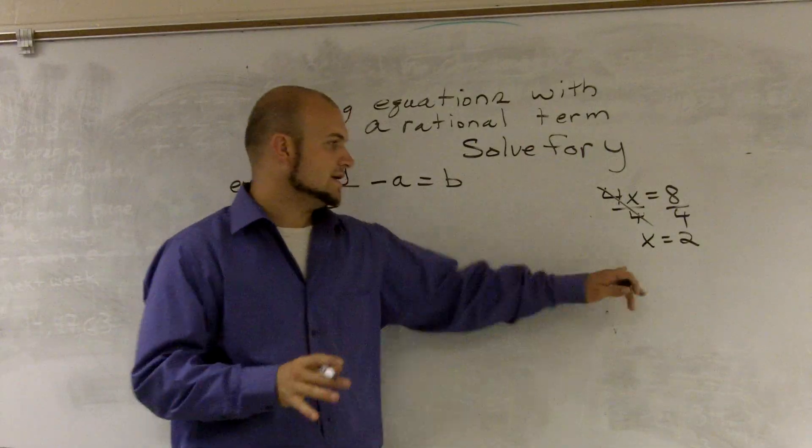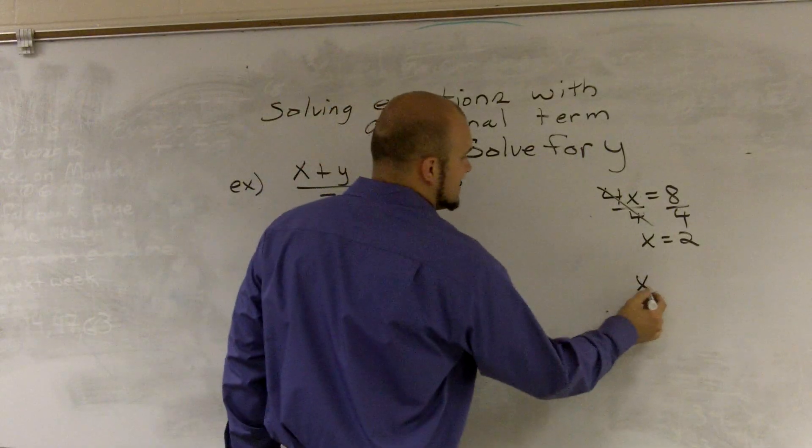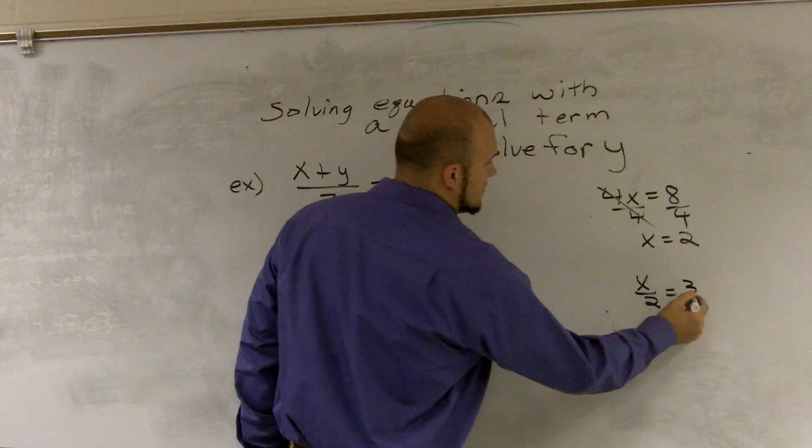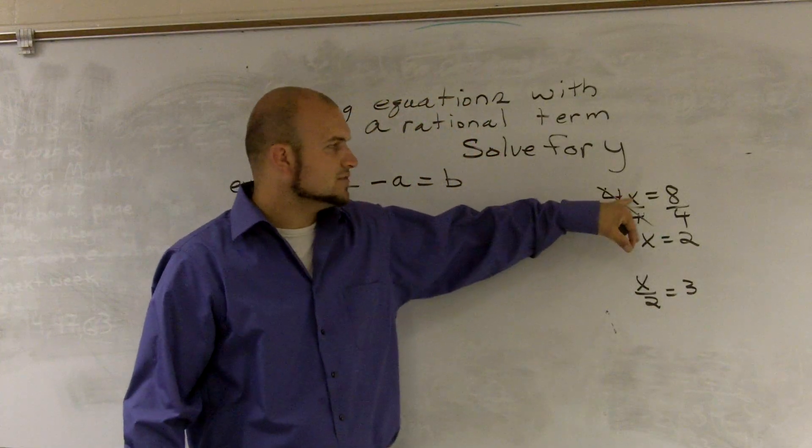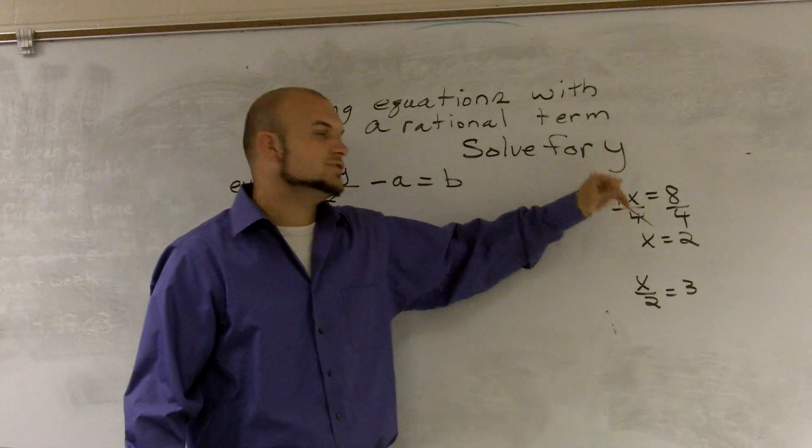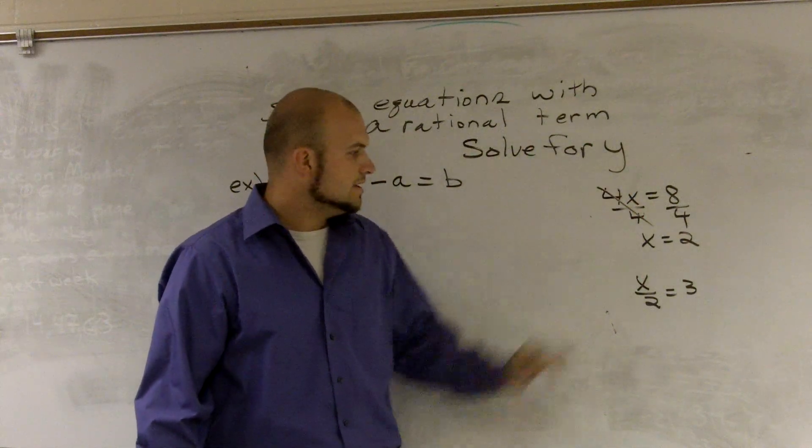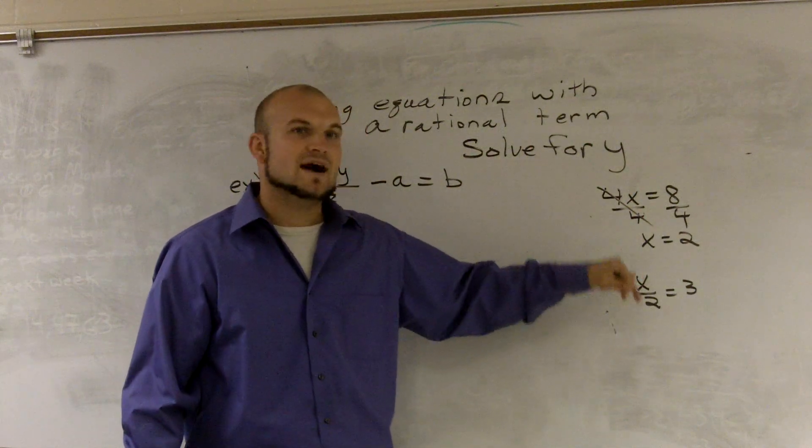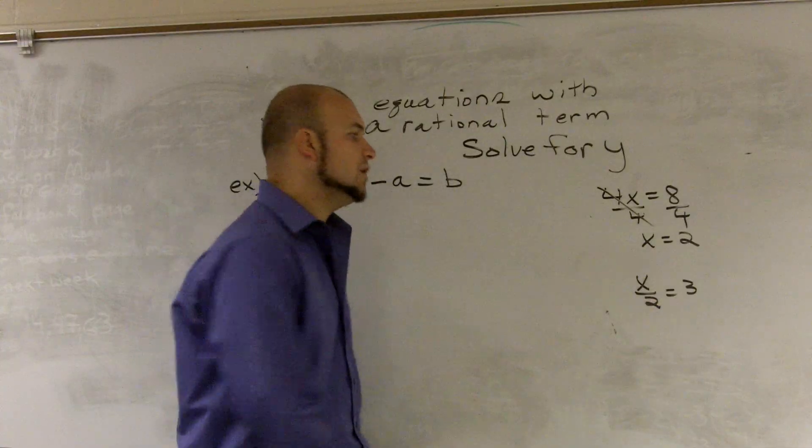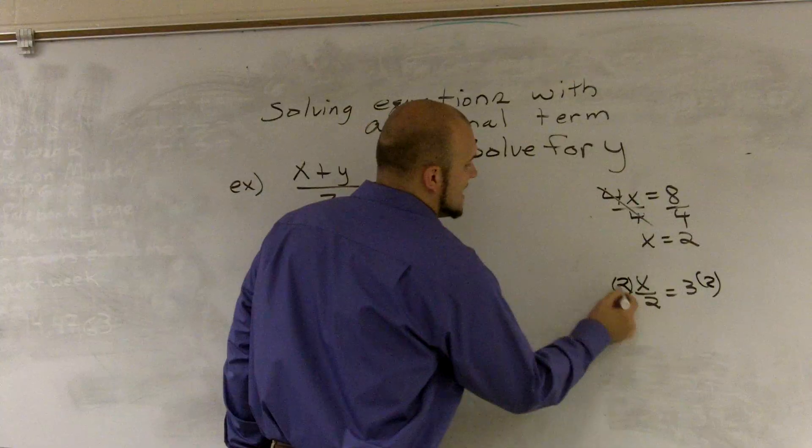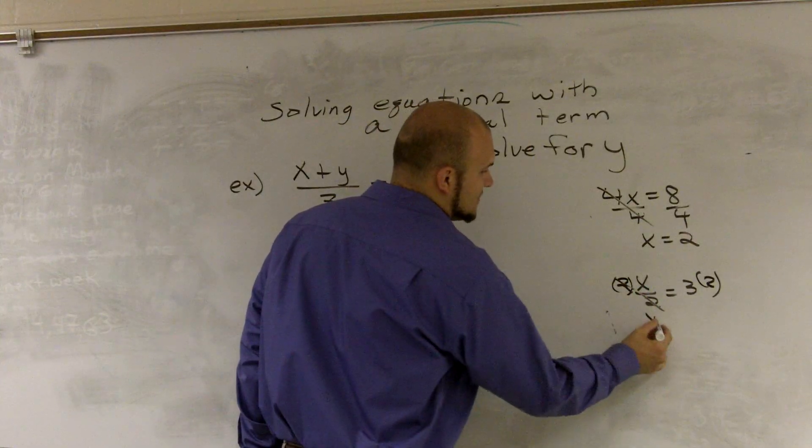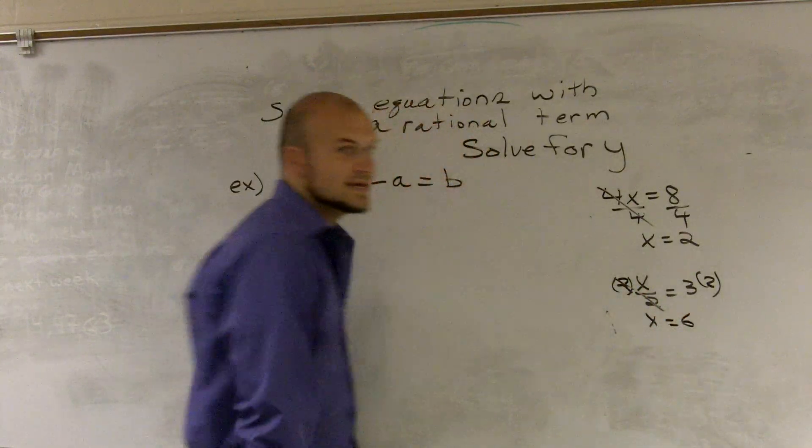However, a problem that we do not work on a lot with you is if you have a problem like this. And it's the same thing. If here the 4 is multiplied by the x, you use an inverse operation which is division. Here, we have an x divided by 2. So the inverse operation would be multiply. So you'd have to multiply by 2 on both sides. Those are still cancelled out. You're left with x is equal to 6.